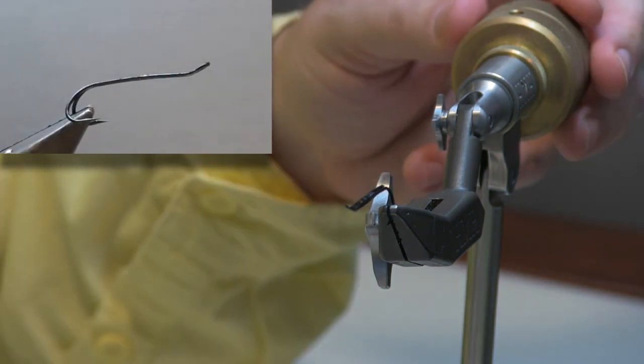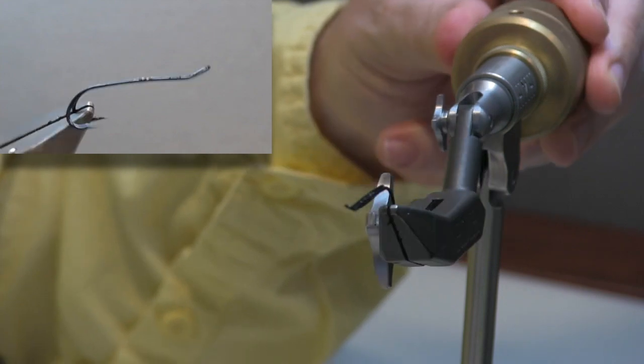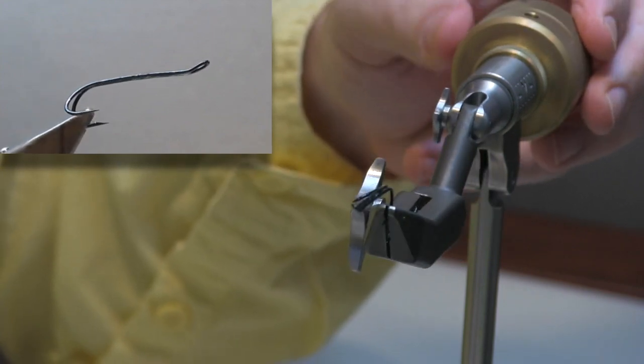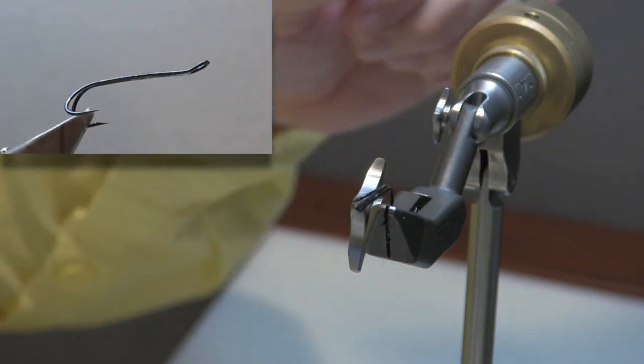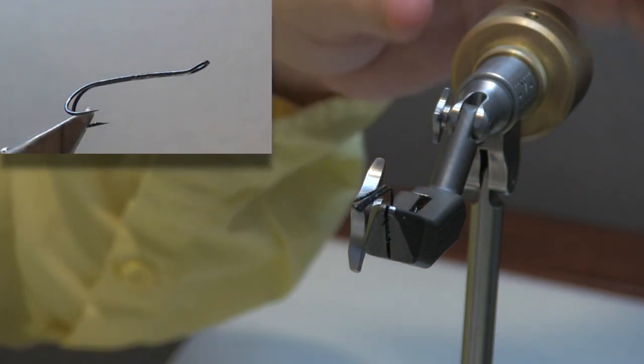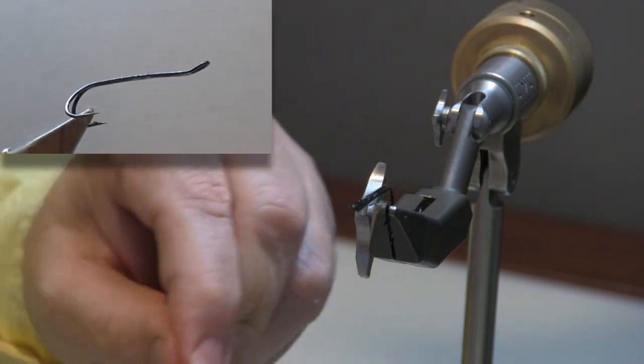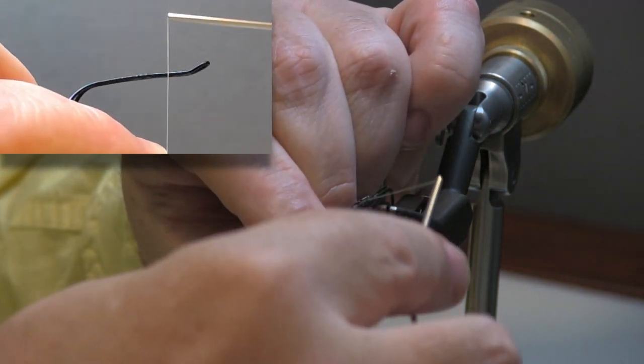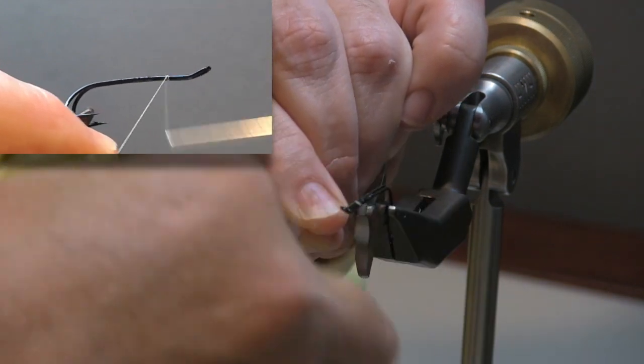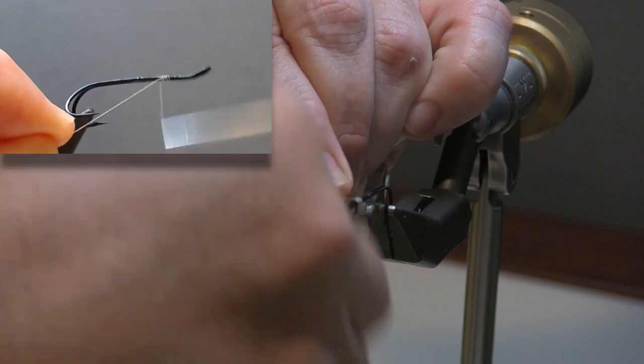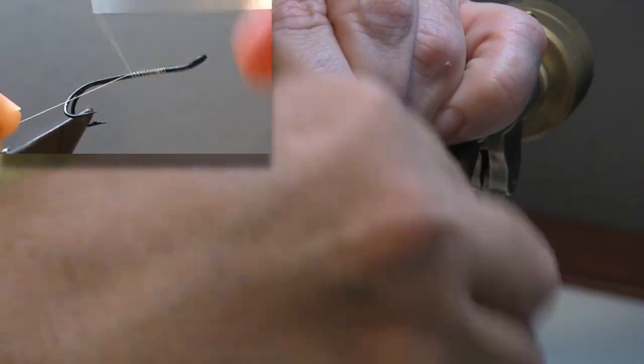In the vise, I have a Partridge Q-Code, which is a low water double hook. As usual when tying on double hooks, you mount the rear hook into the vise. That lets you see where the hook point and barb are, just makes tying easier overall. I'm going to give a fair amount of room up at the eye of the hook for my tie-in point. I don't want to crowd that eye later on.